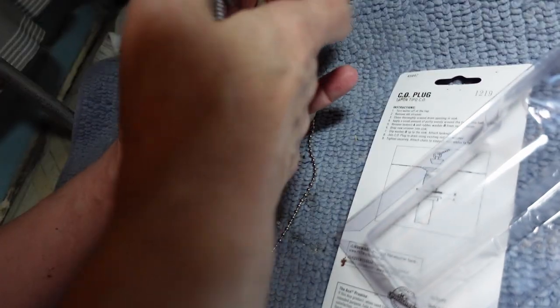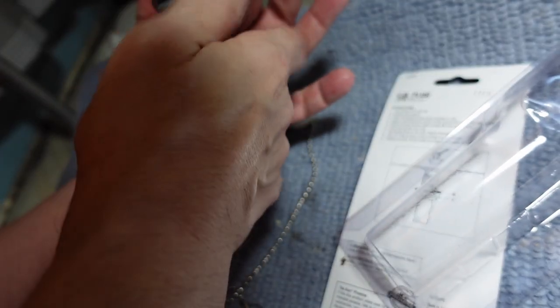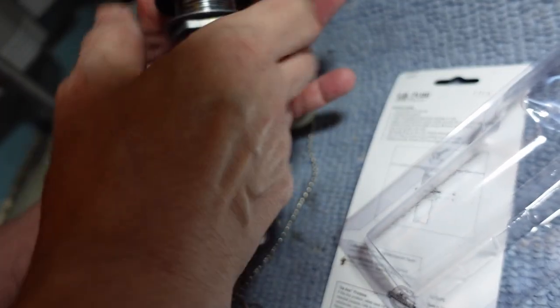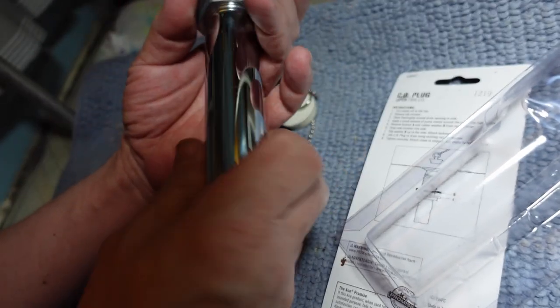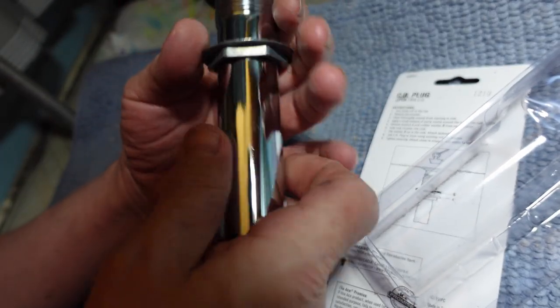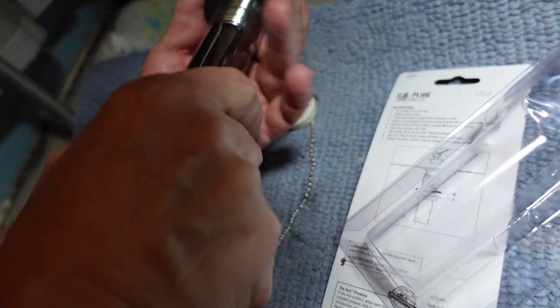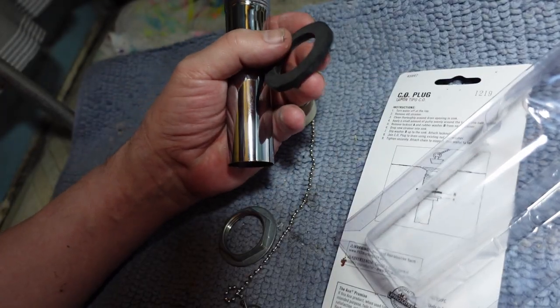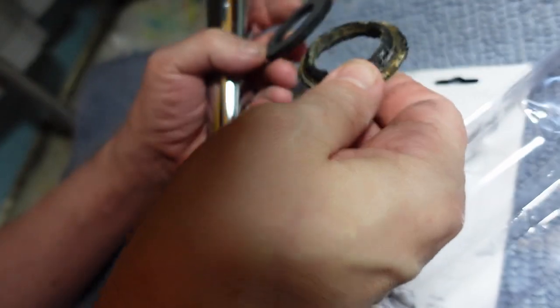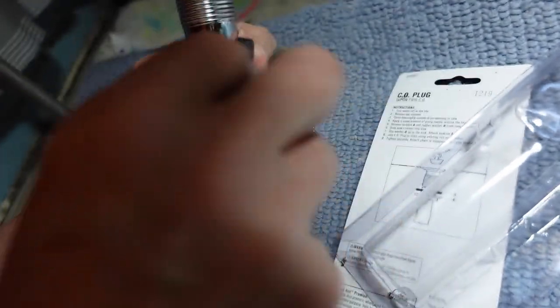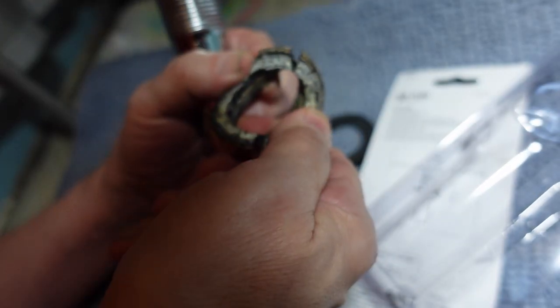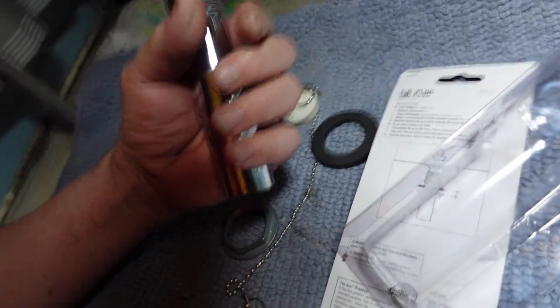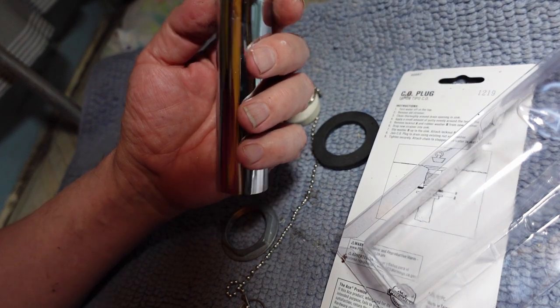There's a nut on here that you unscrew, and there is this rubber washer. Just to show you the difference, this is the old rubber washer, this is the new one. It's kind of flexible and all that. This one, look at how cracked that is, so deteriorated. That needed some replacing.